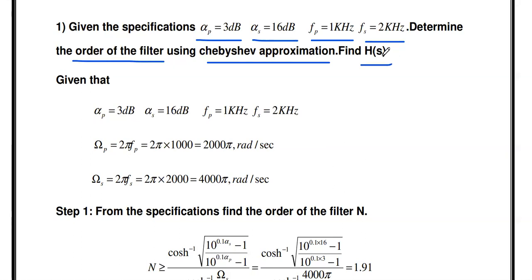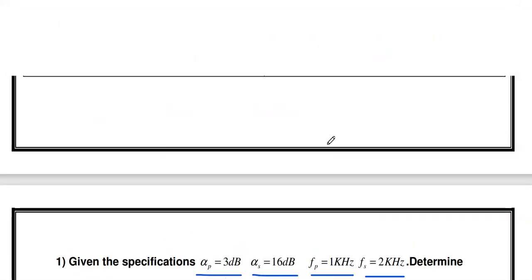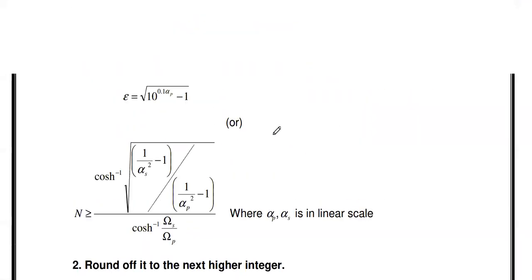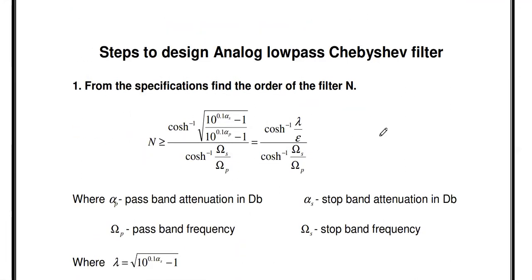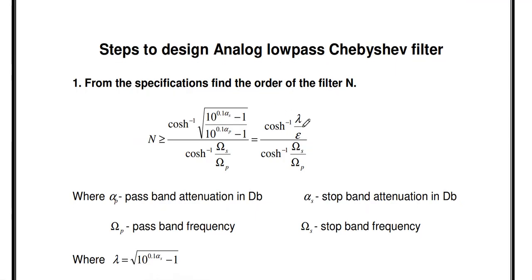The question is: for the given specifications, how to design the Chebyshev filter — that is, how to find the transfer function H(s). To solve this problem, you should know the design procedure of the Chebyshev filter. I already posted the design steps in a previous video — the link is in the description box, so watch that first and then come back to solve this problem.